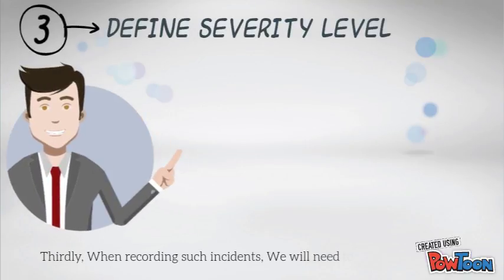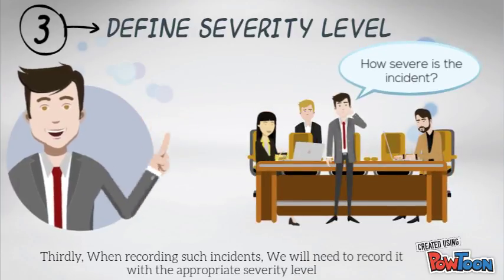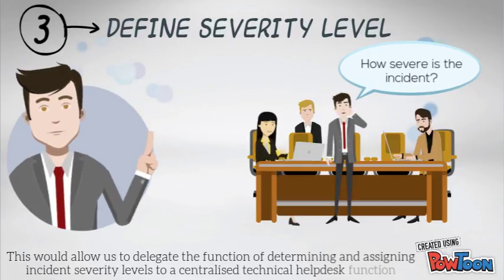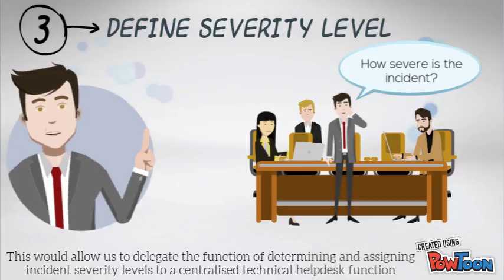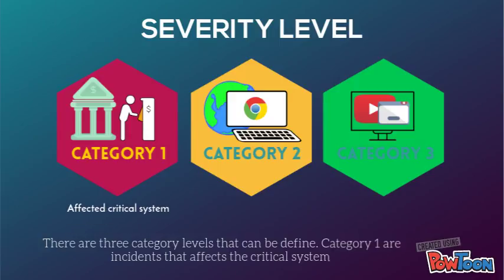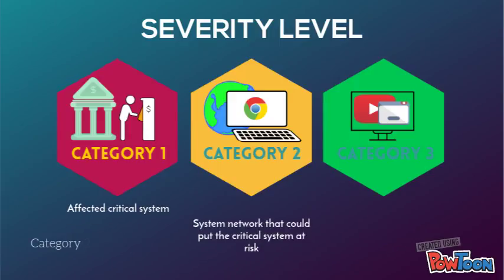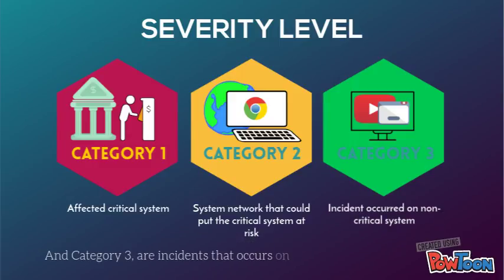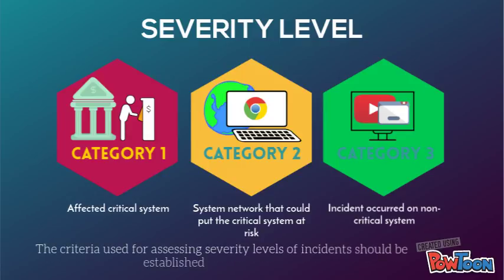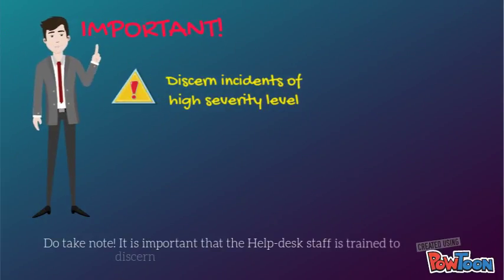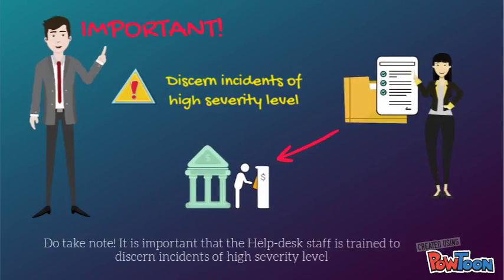Thirdly, when recording such incidents, we will need to record it with the appropriate severity level. This will allow us to delegate the function of determining and assigning incident severity levels to a centralized technical helpdesk function. There are three category levels that can be defined: Category 1 are incidents that affect a critical system; Category 2 are incidents that occur on a system or network that could put a critical system at risk; and Category 3 are incidents that occur on a non-critical system. The criteria used for assessing severity levels of incidents should be established and documented. It is important that helpdesk staff are trained to discern incidents of high severity level.